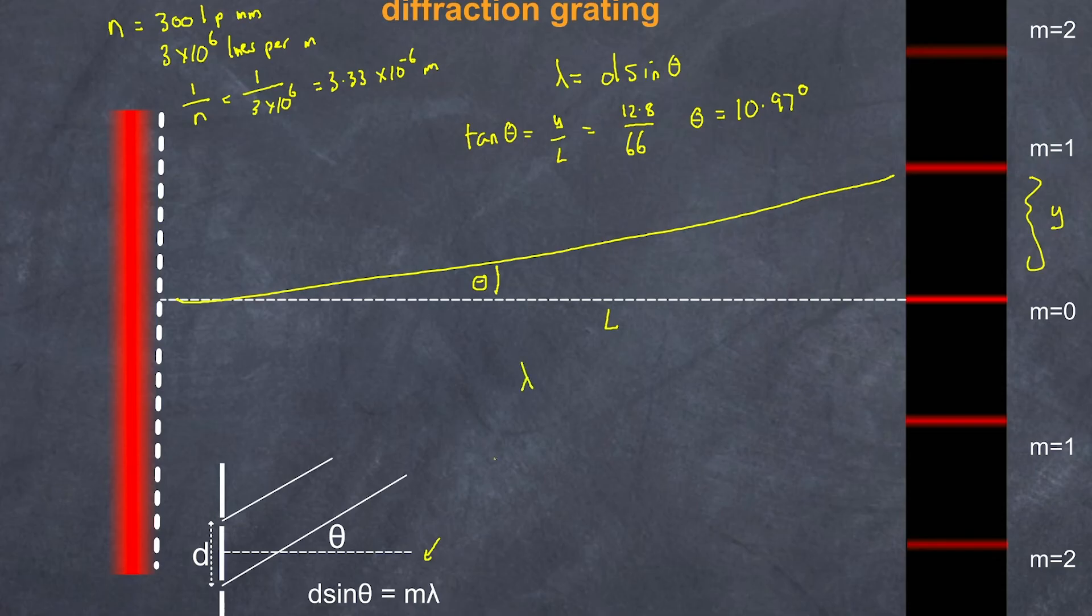Now I can substitute that into this formula. So my lambda, and notice that I've made m equal 1 because we're only interested in the first order maximum here, is equal to d, which we established was already 3.33 by 10 to the power of negative 6, and then multiplied that by sine theta. In this case, we've got sine of my angle of 10.97 degrees. That should give my value for the wavelength of the light that I'm using. And when I get to calculate that out, I'm going to get a value of 633.7 nanometers.